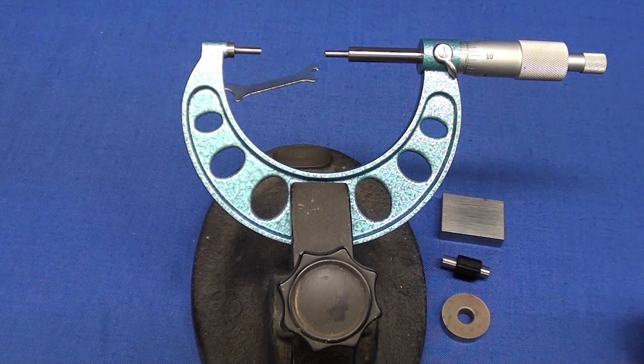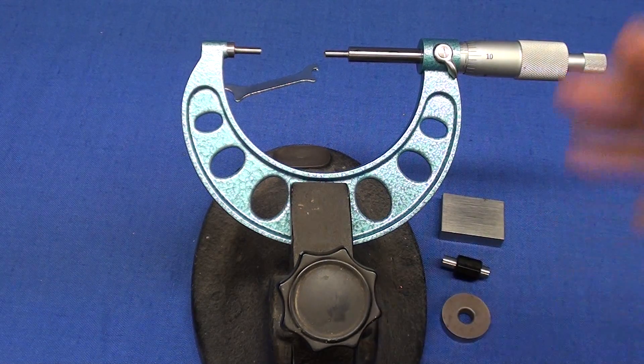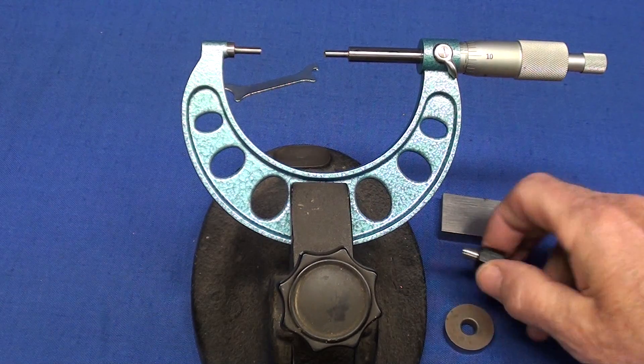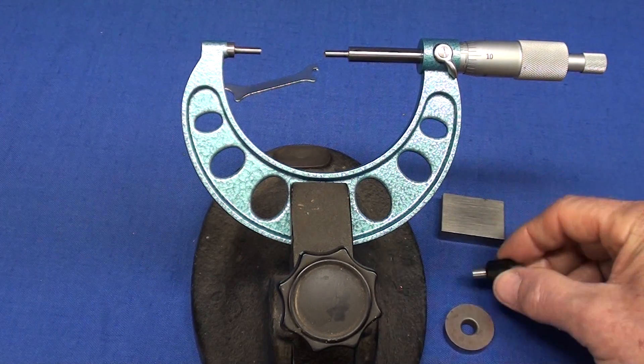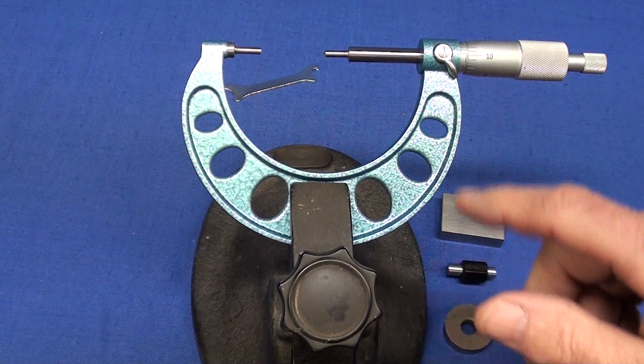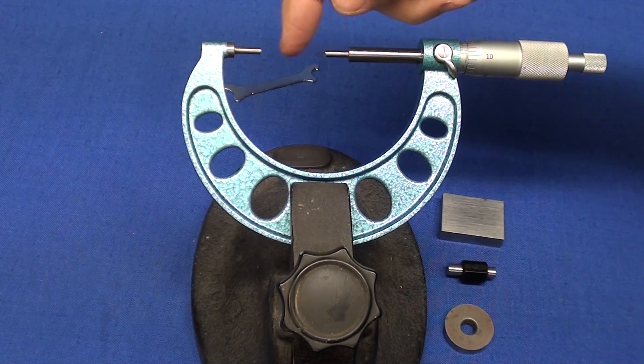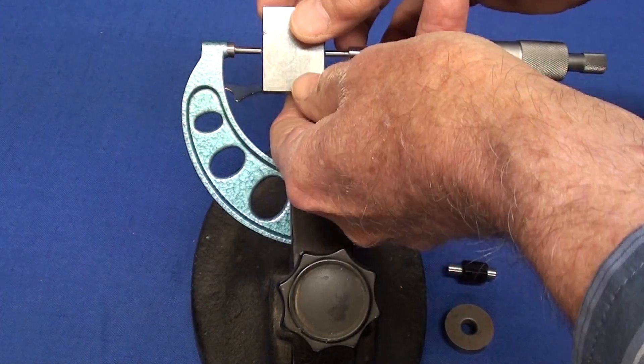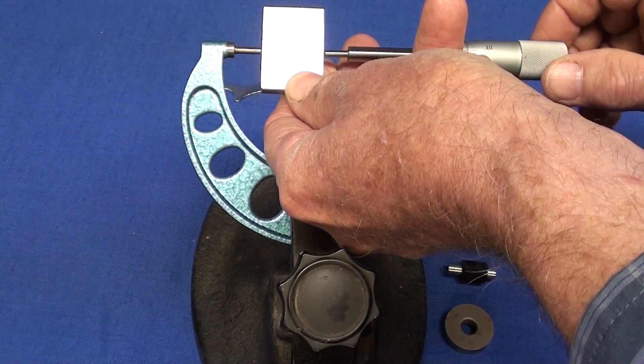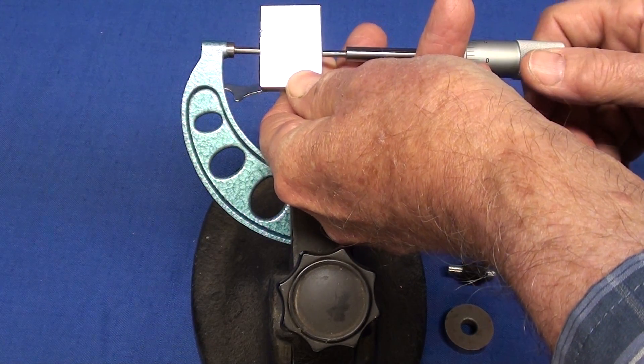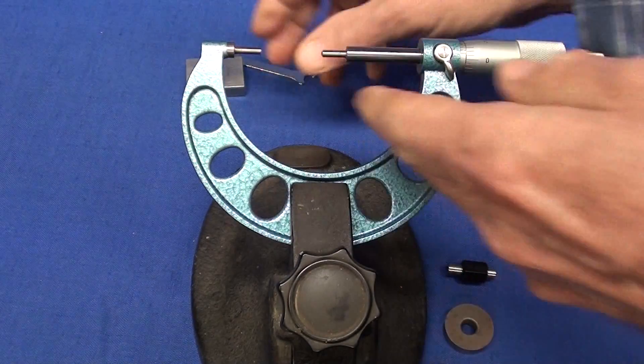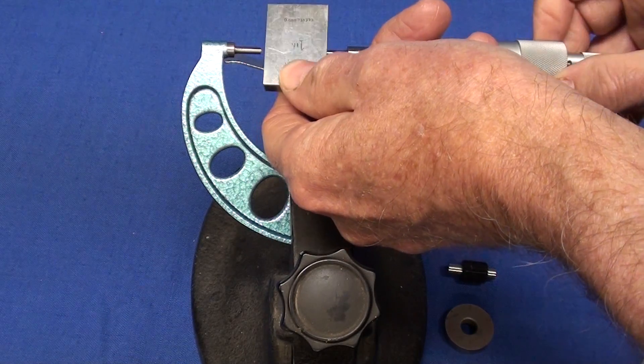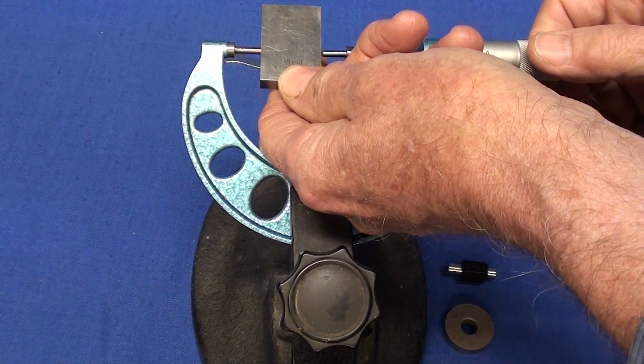Now when you buy a 2-inch micrometer, you're going to find that you might get a round standard or one of these straight ones, cylindrical. I prefer these, but for what I'm going to do here, because of the small anvils on here, I'm going to use a 1-inch gauge block and show you the shortcoming of this particular micrometer. So let me adjust that, and I'm holding this in my Mauser micrometer stand here, which is a quite handy way, especially for this demonstration.